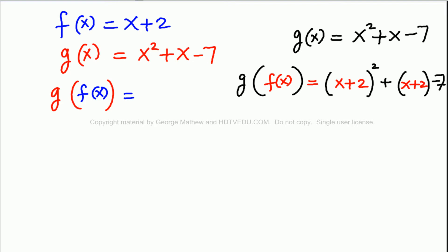So, we rewrite g of f of x and that is equal to what is x plus 2 times x plus 2. x plus 2 to the power of 2 is x plus 2 times x plus 2. So, we have x plus 2 times x plus 2 plus x plus 2 minus 7. And let's do the FOIL.